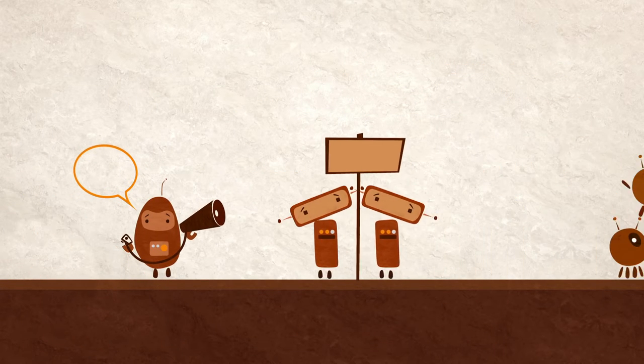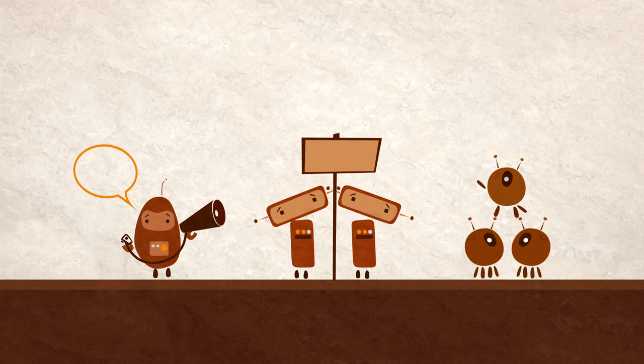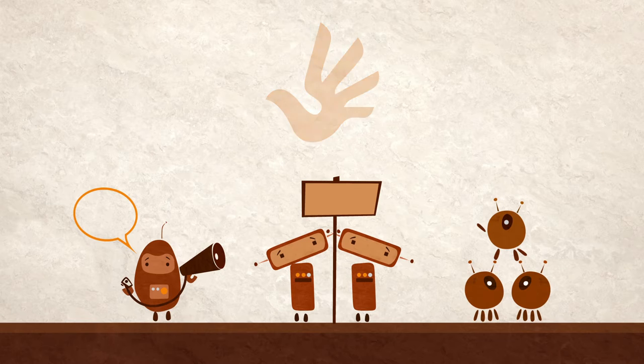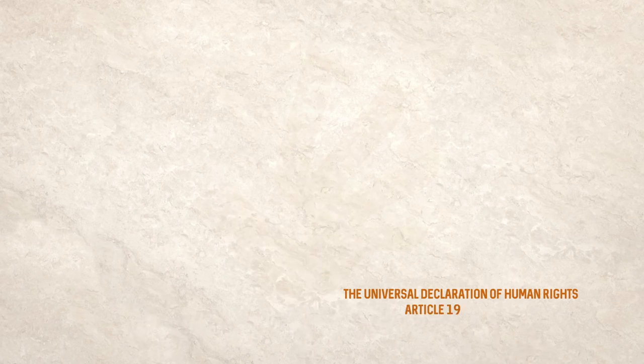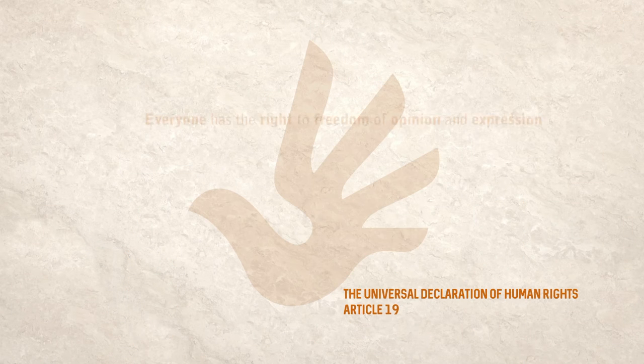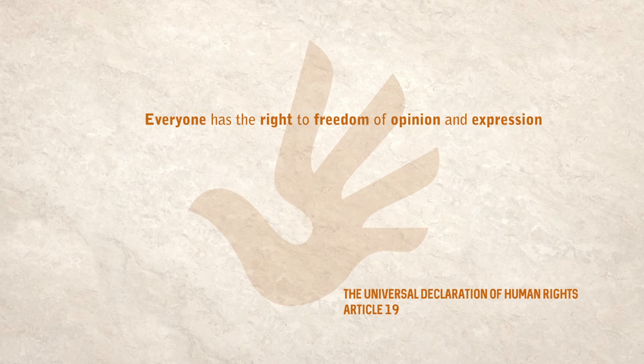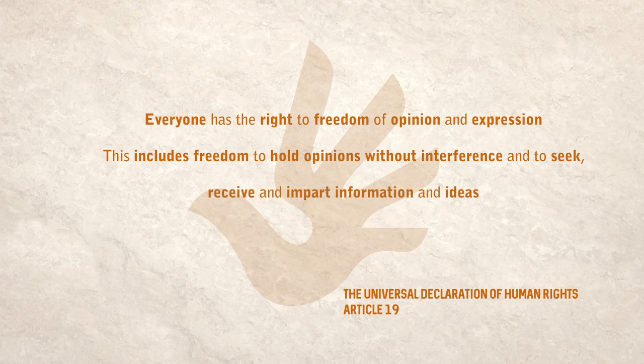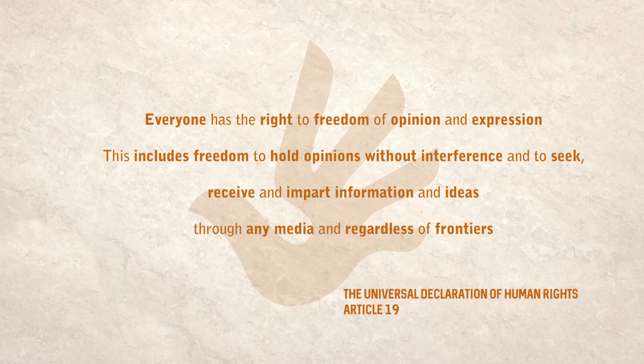Freedom of expression, assembly and association are all protected in international and regional human rights treaties. Article 19 of the Universal Declaration of Human Rights states that everyone has the right to freedom of opinion and expression. This right includes freedom to hold opinions without interference, and to seek, receive and impart information and ideas through any media, and regardless of frontiers.